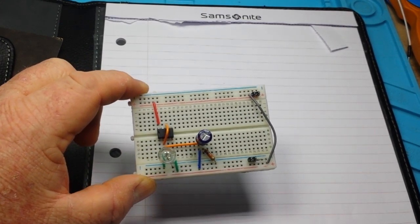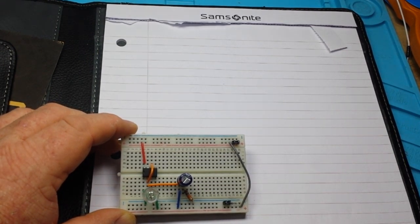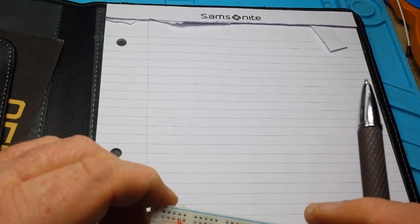It doesn't get any more simpler than this. 555 timer and a little RC network. Let me show you how it works.